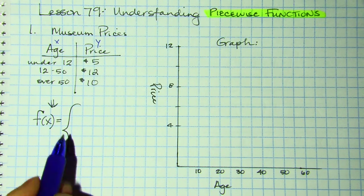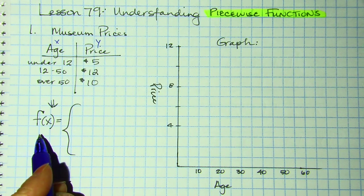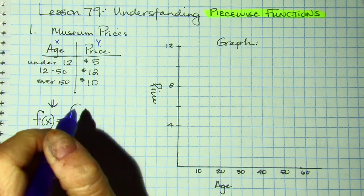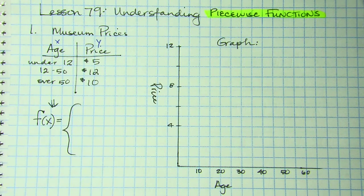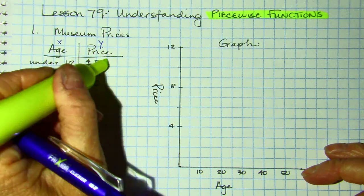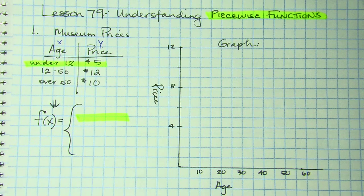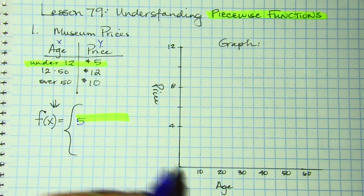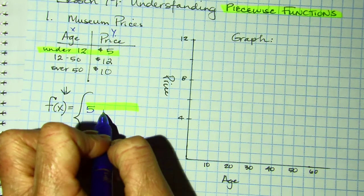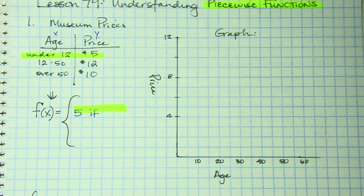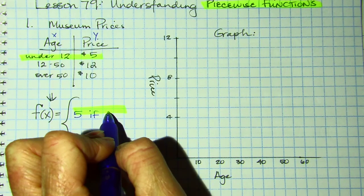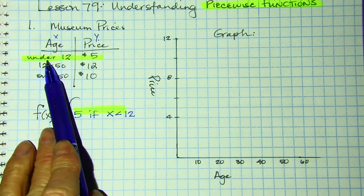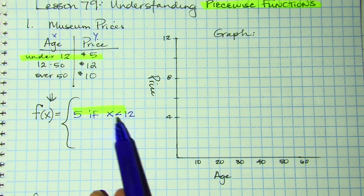We're going to write the function notation — the formulas. So you write your Y value first. F of X equals 5, if X is less than 12, because that's what 'under 12' means — less than 12.